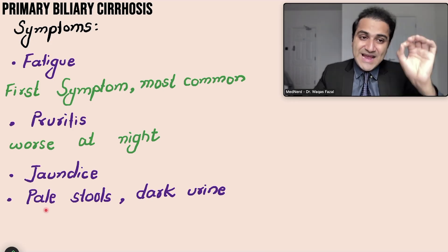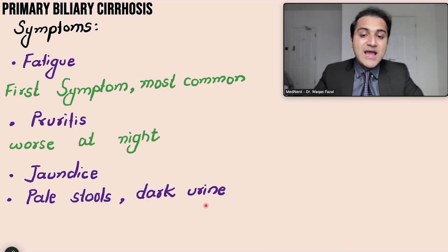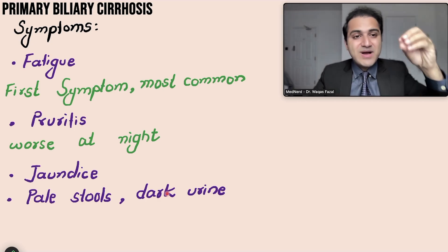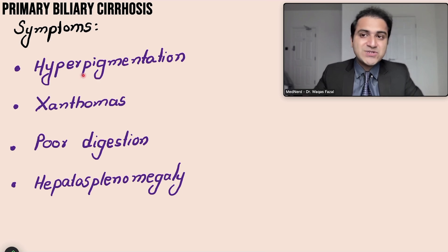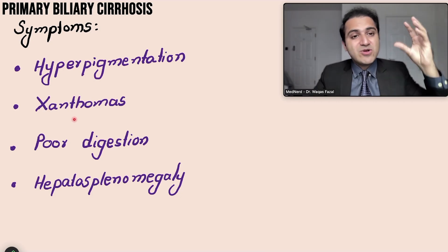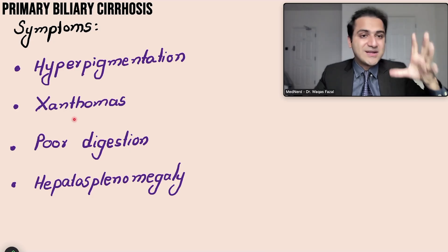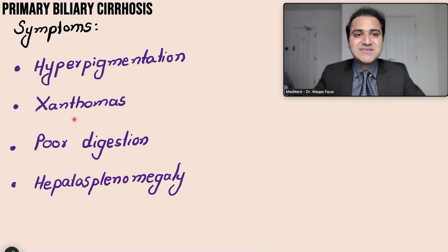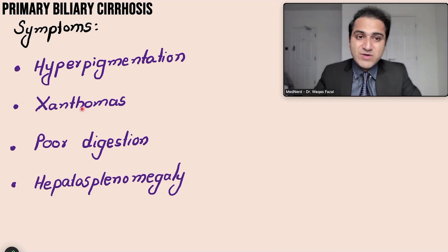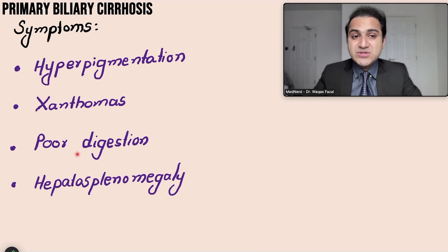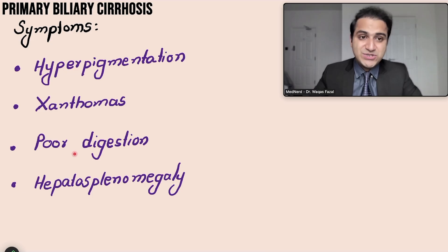Bile gives stools their normal color, so when bile is absent from the stools they become pale. Backed-up bile enters the urine, causing dark urine. There is also increased melanin production resulting in hyperpigmentation. Lipid metabolism is disturbed because bile is not secreted into the intestine, leading to excess lipid deposition and xanthomas, as well as poor digestion and diarrhea.